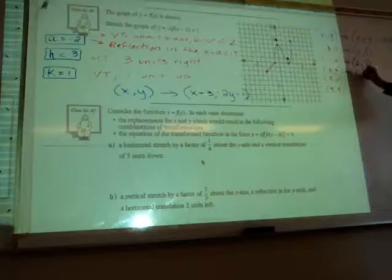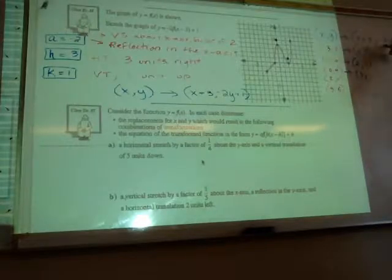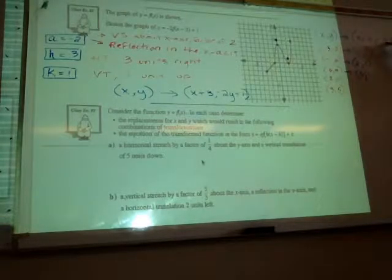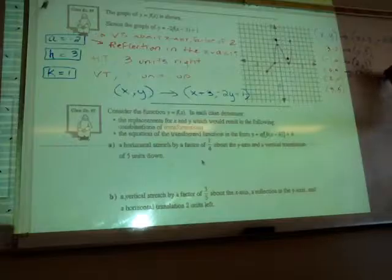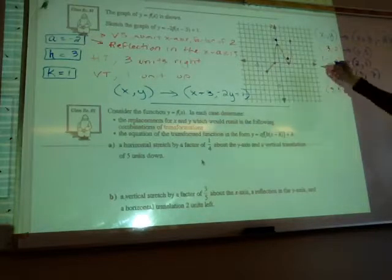0 plus 3 is positive 3. 4 times negative 2 is negative 8, plus 1 is negative 7. We'll plot that now. 3, negative 7.